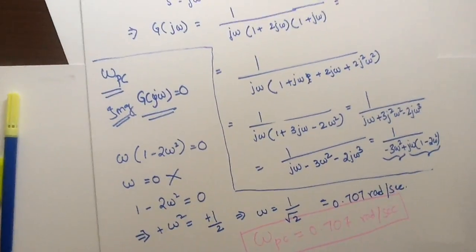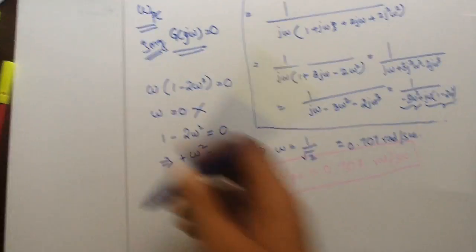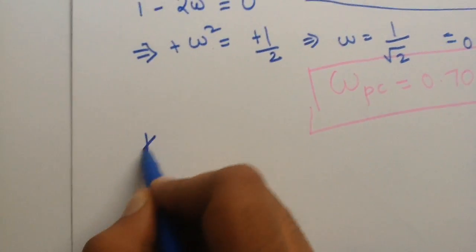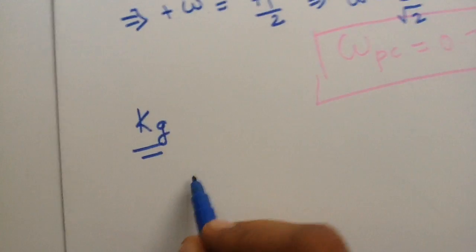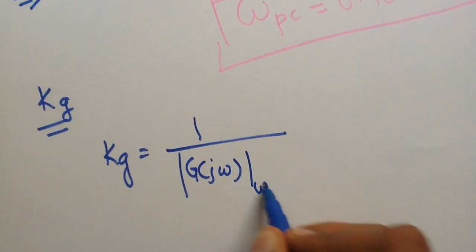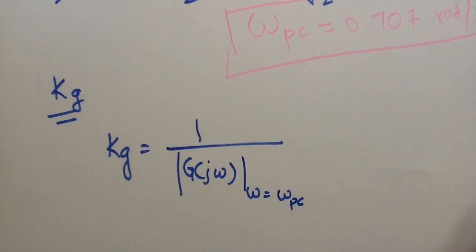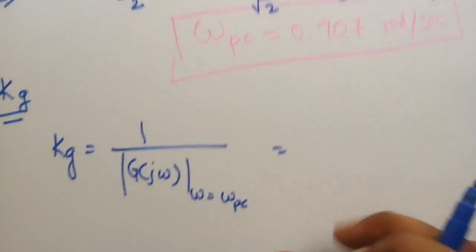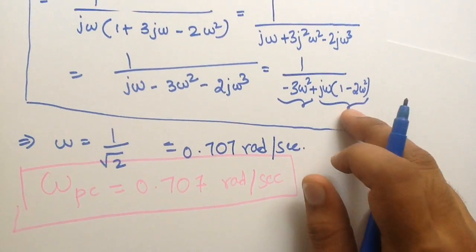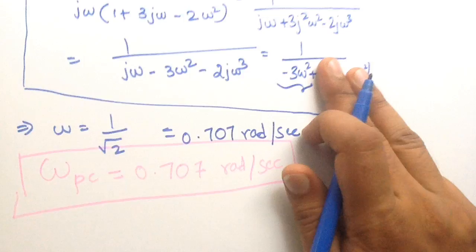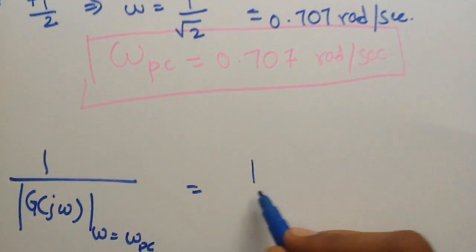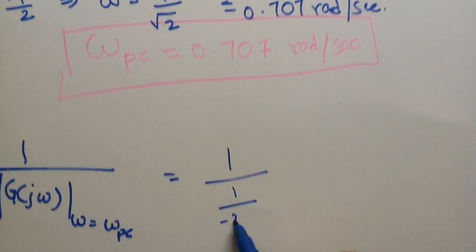So now we need to find out the gain margin. To find out the gain margin, we are going to use our phase crossover frequency. Step 2: in order to find out the gain margin Kg, we know that Kg is equal to 1 by |G(jω)| where ω equals ω_pc, the phase crossover frequency. Just substitute the phase crossover frequency in G(jω). Since this is the phase crossover frequency, the imaginary part is 0, so G(jω) is only the real part: minus 1 by 3ω². So 1 by G(jω) is 1 by minus 3ω².